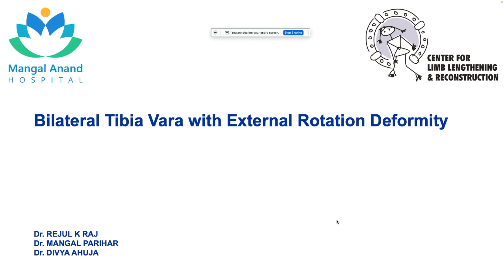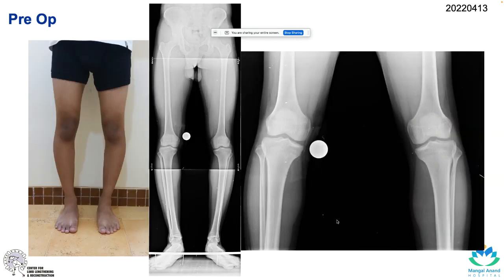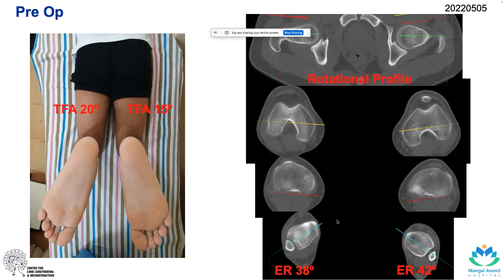We want to discuss a full case planning with x-rays and software. This is a bilateral tibia vara with external rotation deformity in an 18-year-old male. He complains of the deformity, which has increased with his growth spurt over the last six months. He has some mild pain in the knee and a notable squinting patella, indicating an external rotation deformity. Full-length x-rays are done for planning. The thigh-foot axis is measured clinically: 20 degrees on the left side and 15 degrees on the right side.